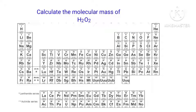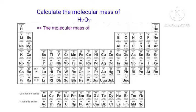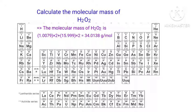In the H₂O₂ molecule, there are two hydrogen atoms and two oxygen atoms present. So the molecular mass of H₂O₂ is 1.0079×2 plus 15.999×2, which is equal to 34.0138 grams per mole.